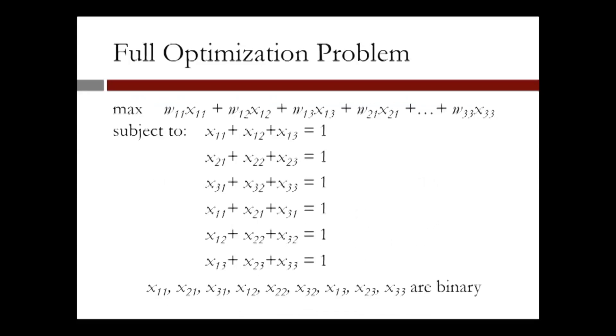The full optimization problem is indicated next. First, we have the objective function we indicated earlier. Next, we have the set of constraints that indicate that every man should match with exactly one woman. Next, we have the constraints that every woman should match with one man. And finally, that the variables are binary.